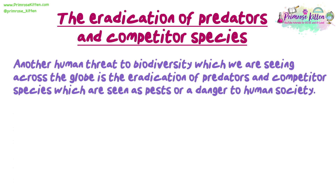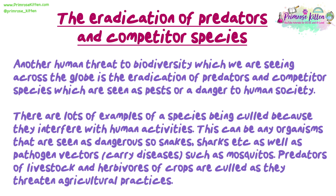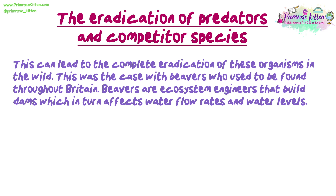Another human threat to biodiversity is the eradication of predators and competitor species which are seen as pests or a danger to human society. There are lots of examples of a species being culled because they interfere with human activities. This can be any organisms seen as dangerous, such as snakes or sharks, as well as pathogen vectors that carry diseases such as mosquitoes. Predators of livestock and herbivores of crops are culled as they threaten agricultural practices, which can lead to the complete eradication of these organisms in the wild.